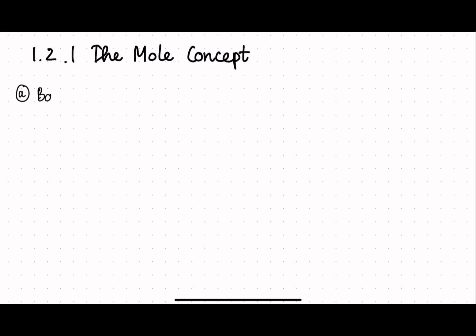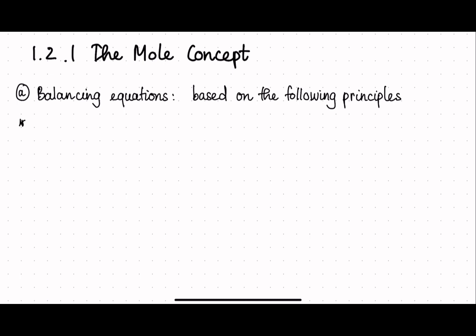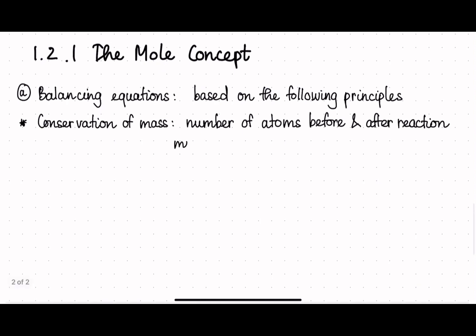So the first section in this subtopic is about balancing equations. There are a few conservation laws that we need to follow in order to balance an equation. The two conservation laws are conservation of mass, which means the number of atoms before and after the reaction must be equal, and the second is conservation of charge. So this means on both sides of the equation, the number of each atom must be equal in number.